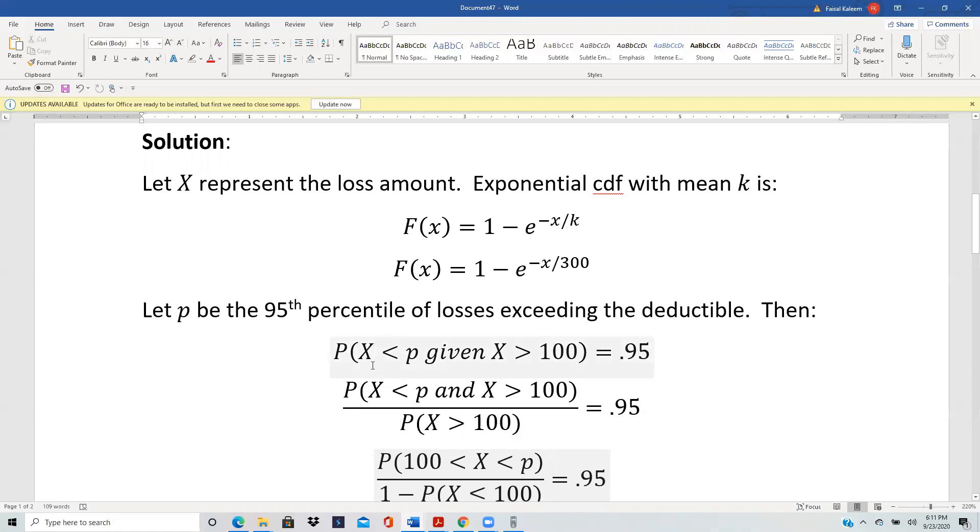So it would be P(X < P | X > 100), we want that to be equal to 0.95, because the deductible is 100.